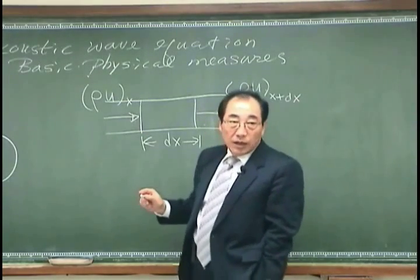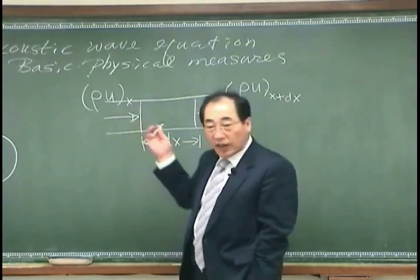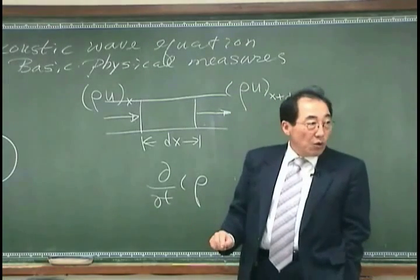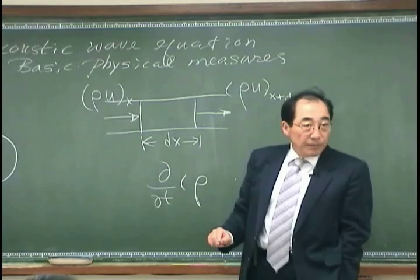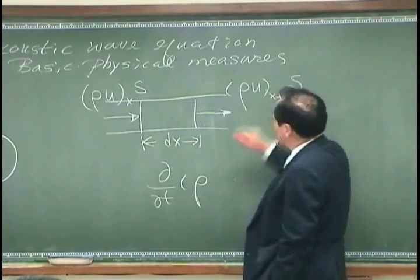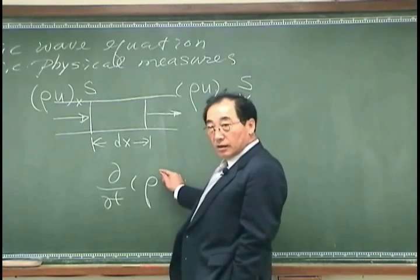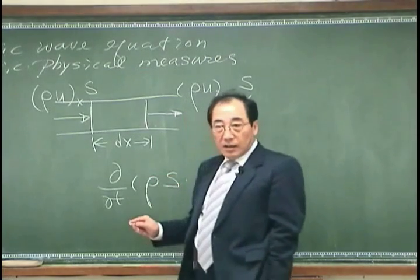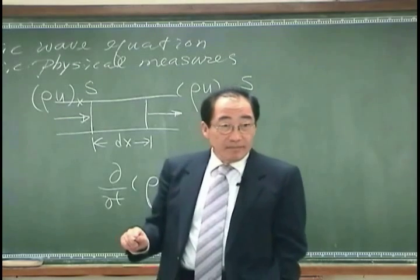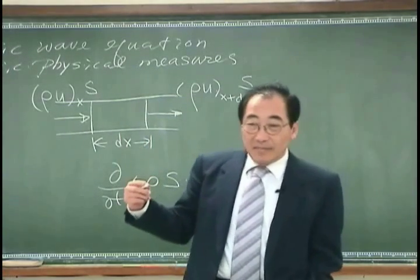That has to be balanced by momentum increase inside of this volume. That can be written as d dt. The momentum inside of the volume would be rho, what is it? Of course I multiply s, this cross sectional area, or is it what should be over here, rho d, rho s. That is the mass and ds.